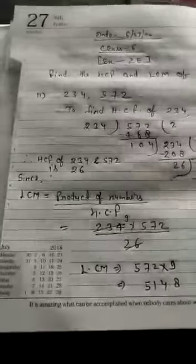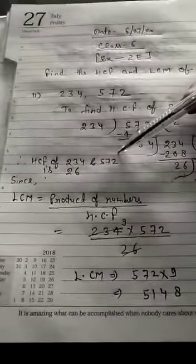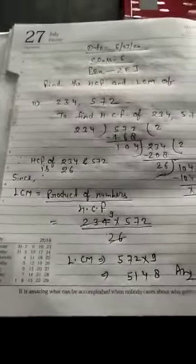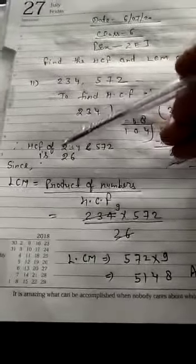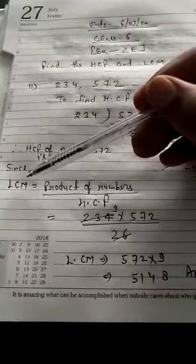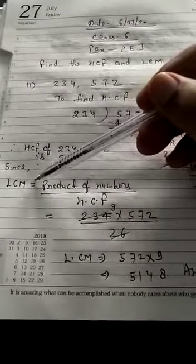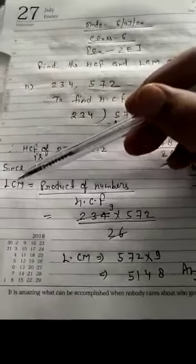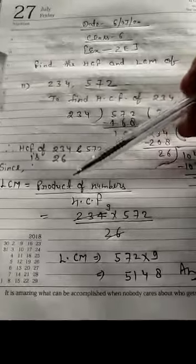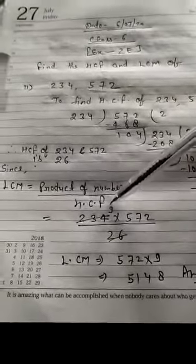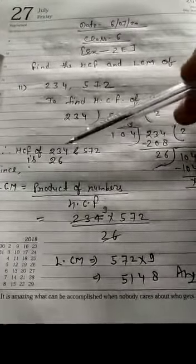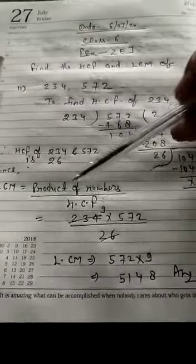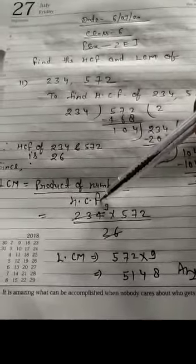Therefore the HCF of 234 and 572 is 26. Now we need one very important formula: LCM of the given numbers is equal to the product of the numbers divided by their HCF. So we multiply the given numbers and then divide that product by the HCF.